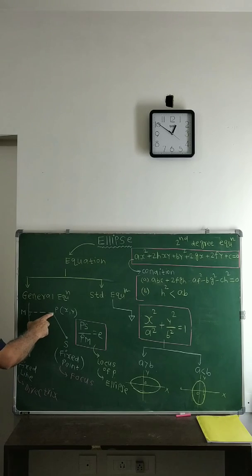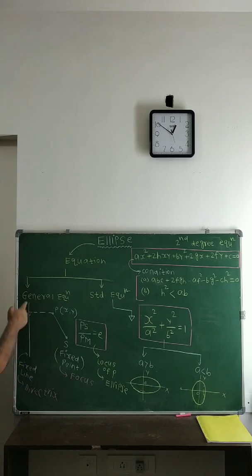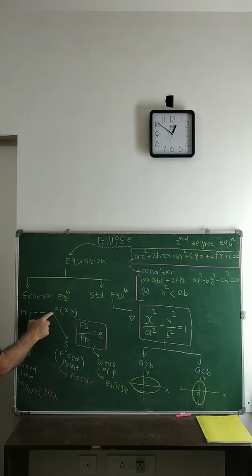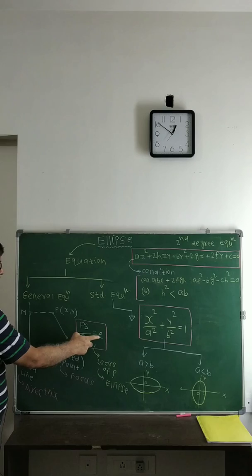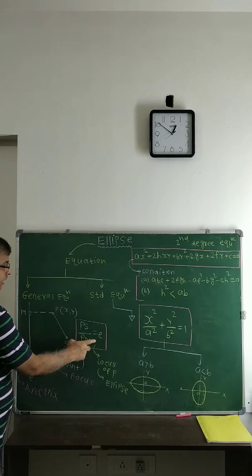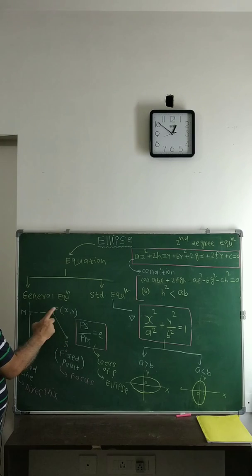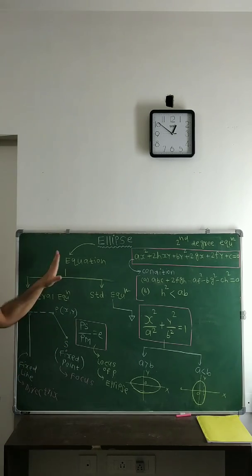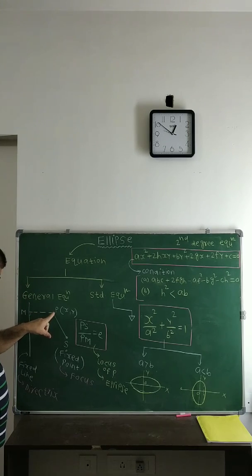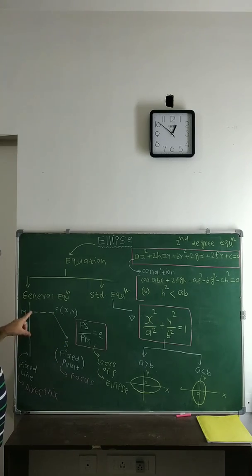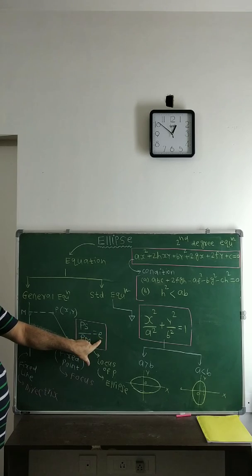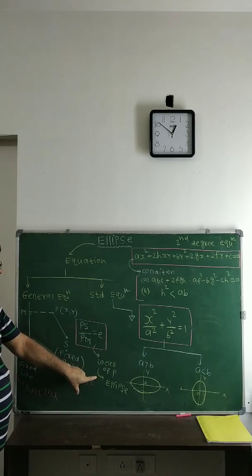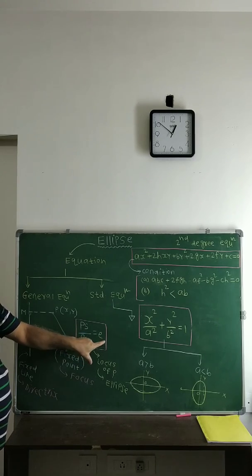If there is a point P in the xy-plane, a fixed point S (the focus), and a fixed straight line (the directrix), and if the ratio of the distance PS to the perpendicular distance PM is a constant e, then the locus of P represents an ellipse. In other words, an ellipse is the locus of a point such that its distance from a fixed point divided by its perpendicular distance from a fixed line is a constant ratio called eccentricity, and this ratio must be greater than zero and less than one.